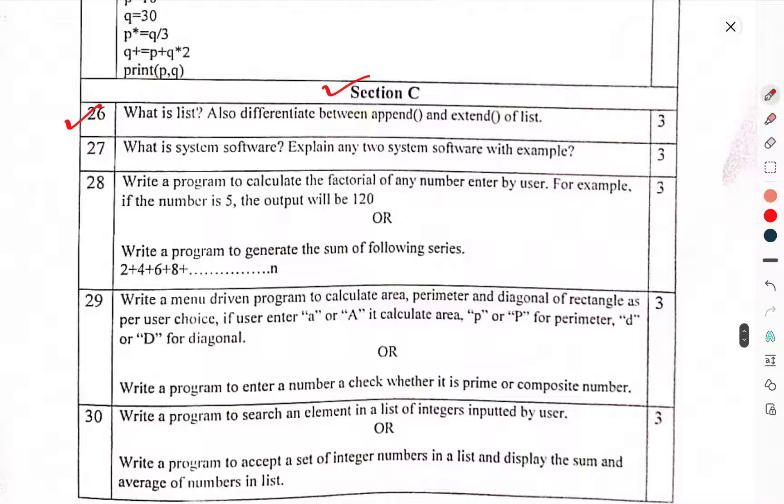Now we have come to Section C. Question 26: What is list? Also differentiate between append and extend of list. Question 27: What is system software? Explain two system software with examples. Question 28: Write a program to calculate the factorial of any number entered by user. For example, if the number is 5, output will be 120.